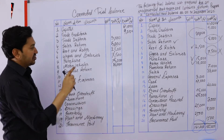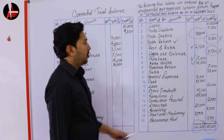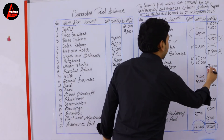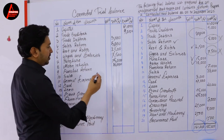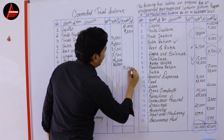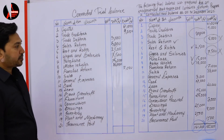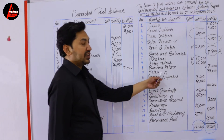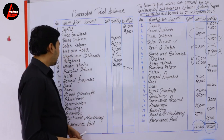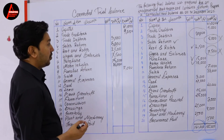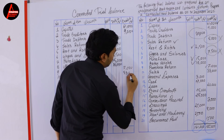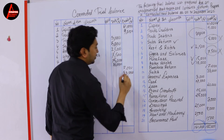Next is purchase return — purchase return is credited, and it is written correctly here. So write purchase return on the credit side: 7,000 dollars. Next is sales — revenue. Revenue is always credited, a nominal account. How much revenue? 33,000 dollars — written correctly on the credit side.